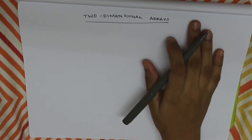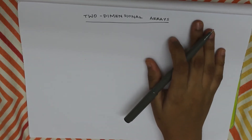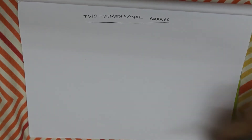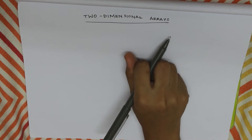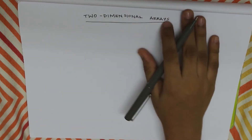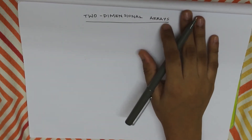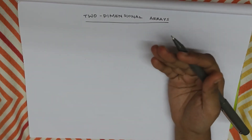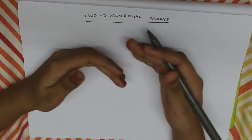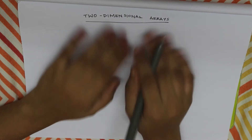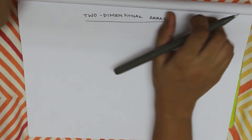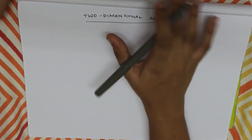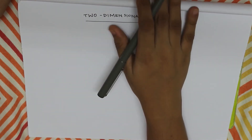Hello friends, welcome back to another video. How do we represent two-dimensional arrays in the computer? How do we use it? What is actually a two-dimensional array?